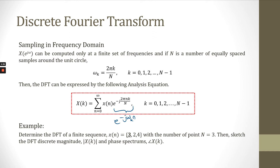For this example, we need to determine the DFT of a finite sequence x[n] with values 3, 2, 4 for n equal to 0, 1, and 2, with the number of points N equal to 3. Then, sketch the discrete magnitude and phase spectrum of the DFT signal X[k].